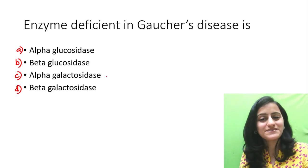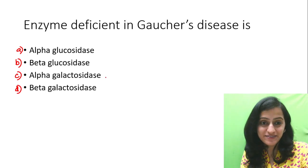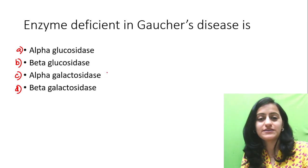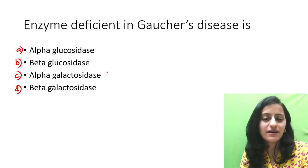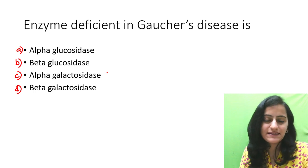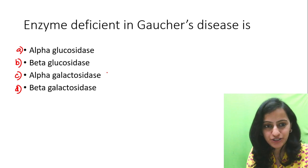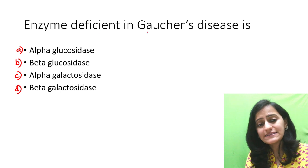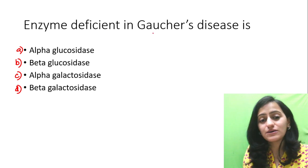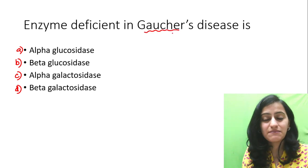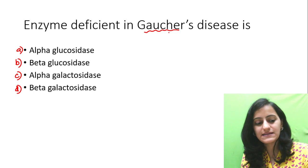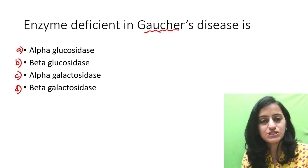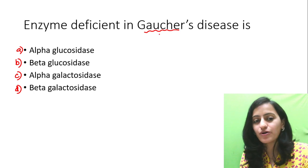Hello everyone, this is Dr. Nikita here and today we are going to learn the mnemonic for enzyme deficiency — the most important, confusing ones like we see in this question. Enzyme deficient in Gaucher's disease. Now Gaucher's disease is something which is very very important for the exam, be it NEET-PG, NICT or FMG.